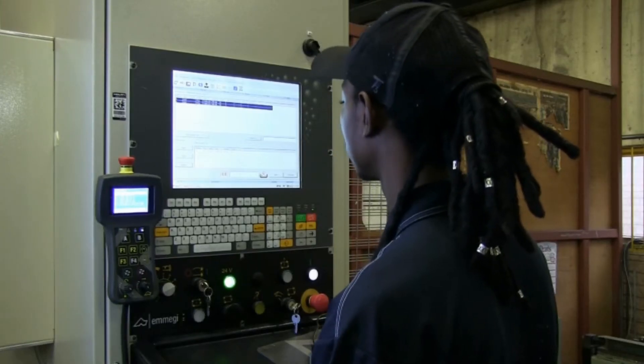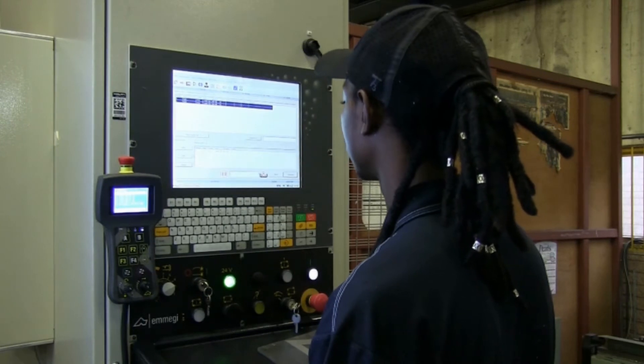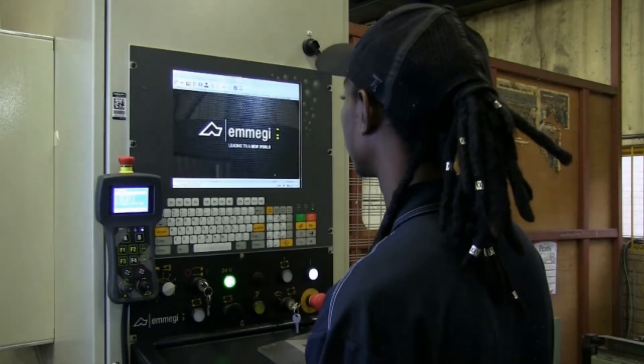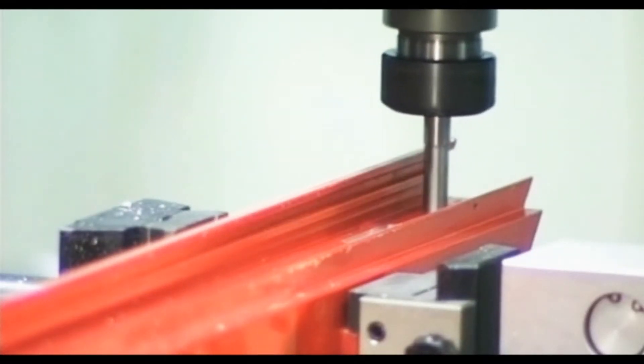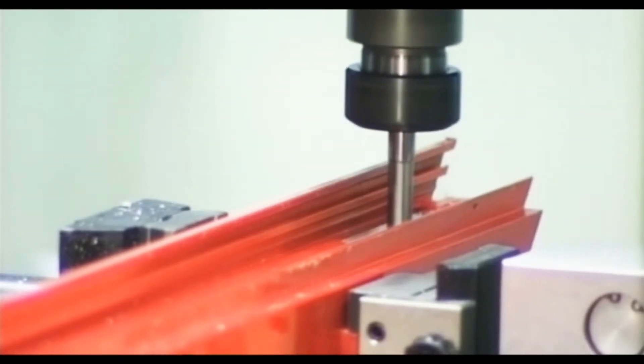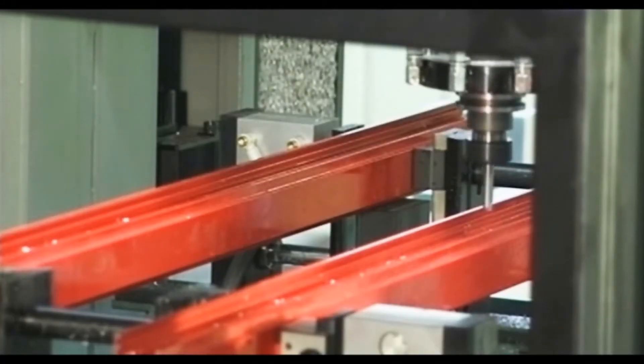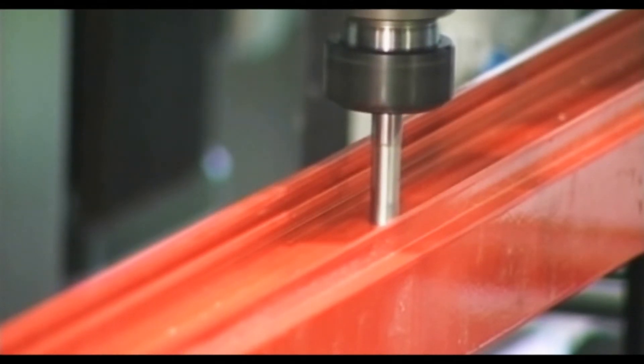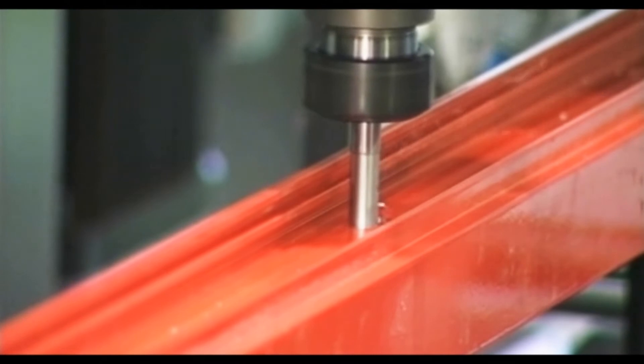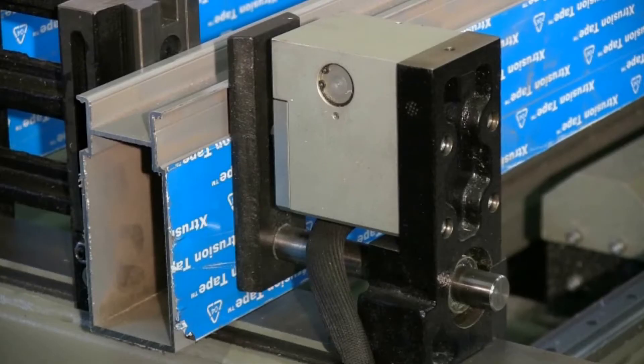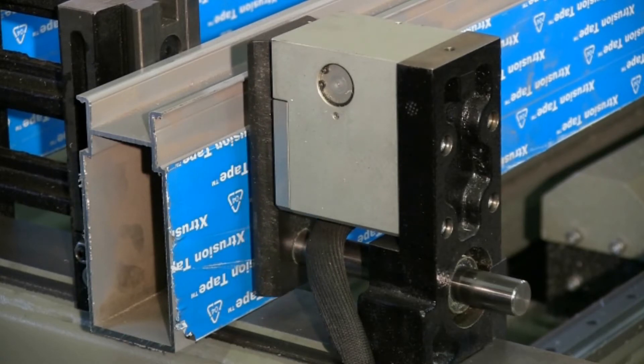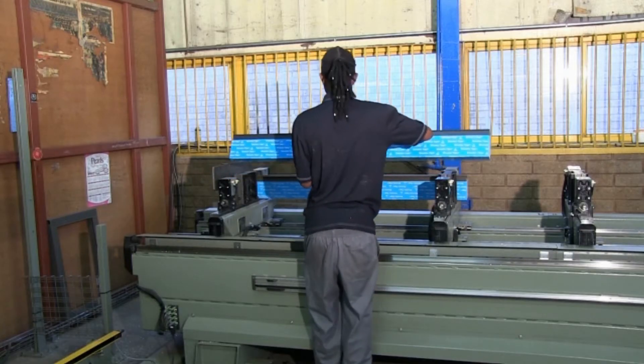The diamond executes all machining automatically. After programming the clamps are positioned automatically on the x-axis according to the profile length and operations to be carried out ensuring that each profile is held securely in place. When the machine is complete the clamps open automatically allowing the operator to unload the profile.